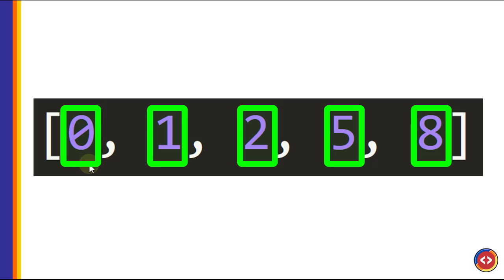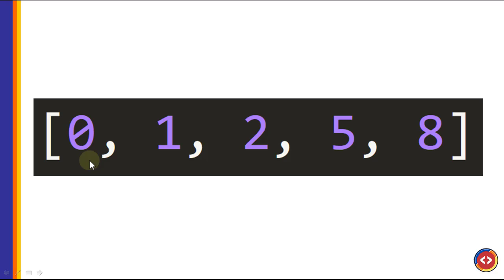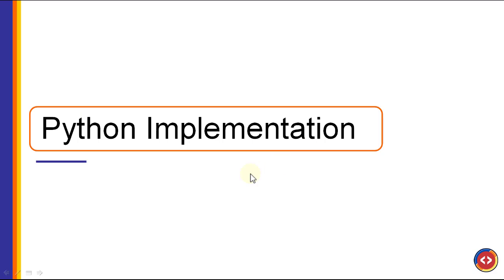Some implementations of the algorithm will go through the entire list once per element, and others will be more optimized and detect when the list is already sorted so you don't have to continue the process. Now let's start diving into the Python implementation of bubble sort and see how you can write the code.